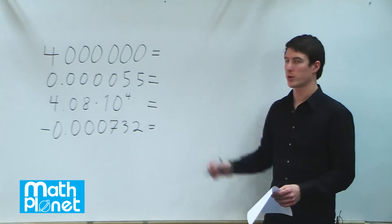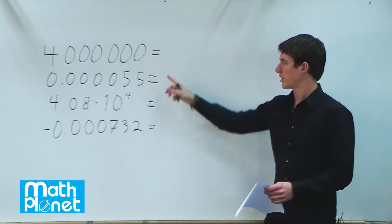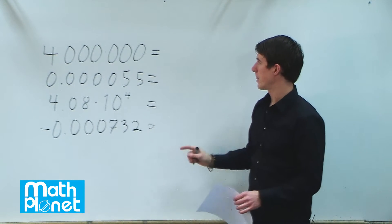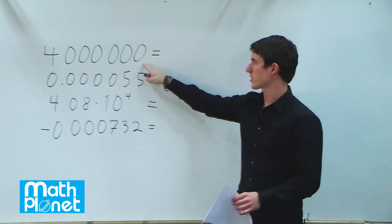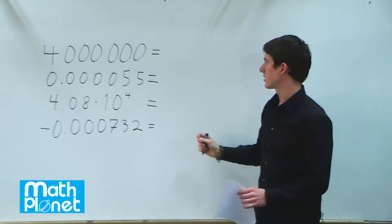For these different numbers, we want to rewrite them from standard to scientific notation or vice versa. This number is in standard form and we want to write it in scientific notation. One quick way to look at this is to see how many zeros we have, and that will be our power in scientific notation.